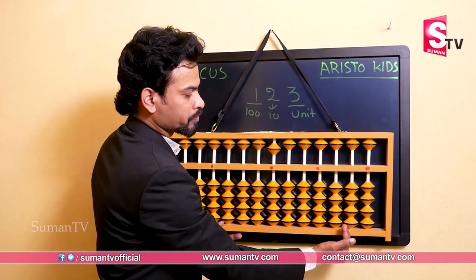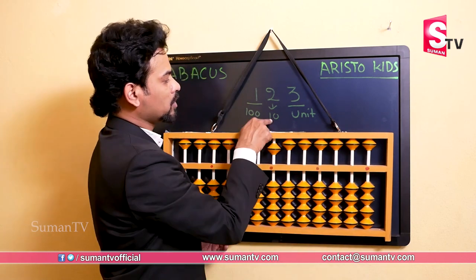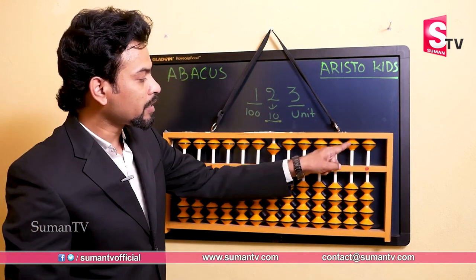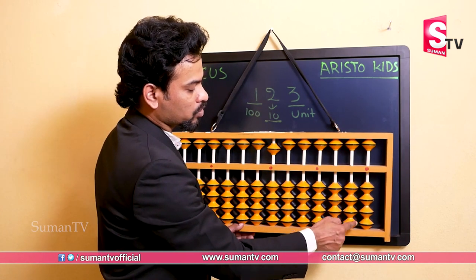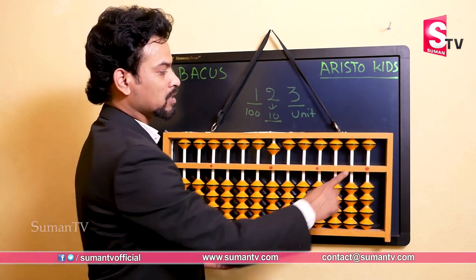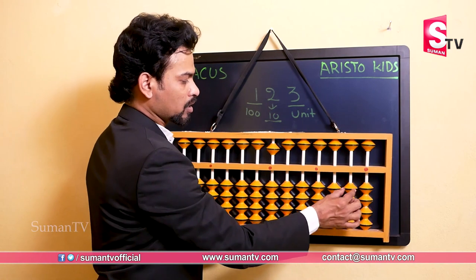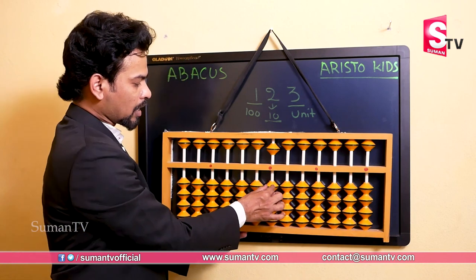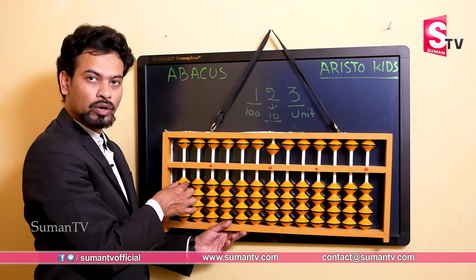Left to the unit place is the tens place. In the tens rod, each lower bead has a value of 10 and the upper bead has a value of 50. The value increases 10 times as you move left: 1, 10, 100, 1000, 10,000, 1 lakh, 10 lakh, 1 crore, 10 crore, 100 crores, 1000 crores, 10,000 crores and 1 lakh crore — we can count up to this. Similarly the upper bead is 5, 50, 500, 5000, 5 lakh, 50 lakh and so on.